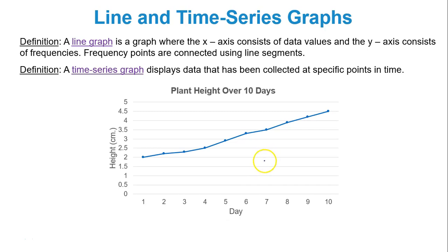A line graph is a graph where the x-axis consists of data values and the y-axis consists of frequencies. So you have data values on the x-axis, frequencies on the y-axis. Frequency points are connected using line segments. In a time series graph it displays data that has been collected at specific points in time. So literally for time series my x-axis represents time.